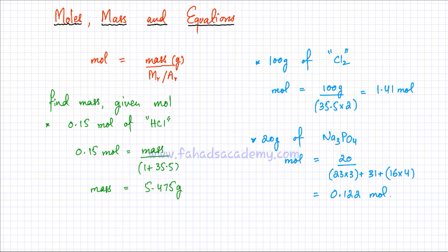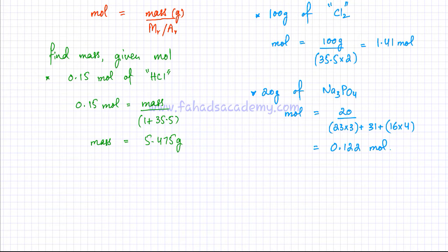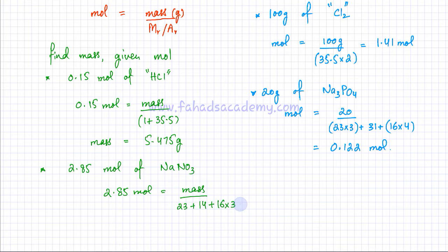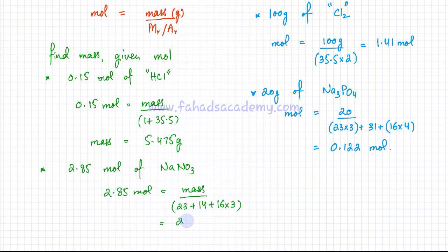Let's do a similar question: find the mass of 2.85 moles of NaNO₃. Using the same formula, moles equals mass over Mr. The Mr is 23 (sodium) + 14 (nitrogen) + 16 × 3 (three oxygens). Solving: mass equals 2.85 multiplied by (23 + 14 + 48), which gives 242.25 grams.